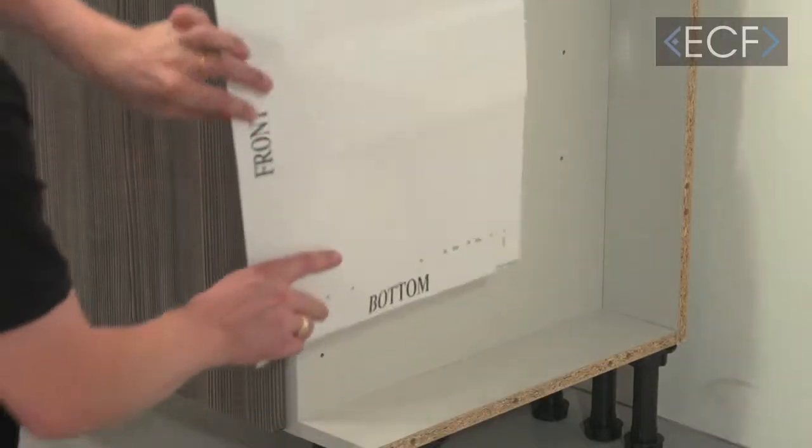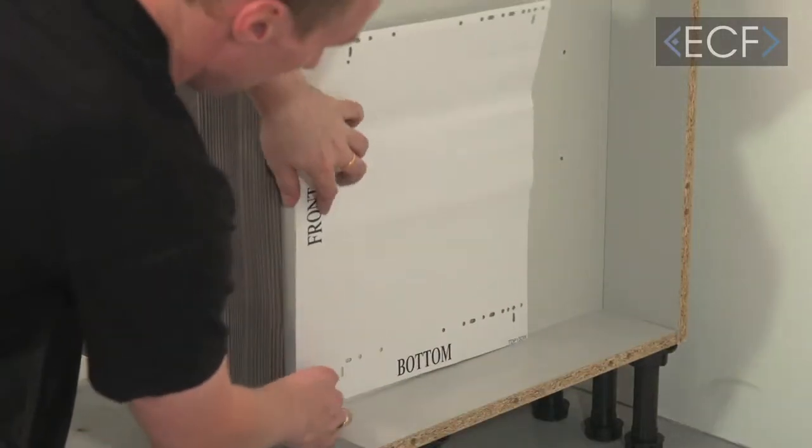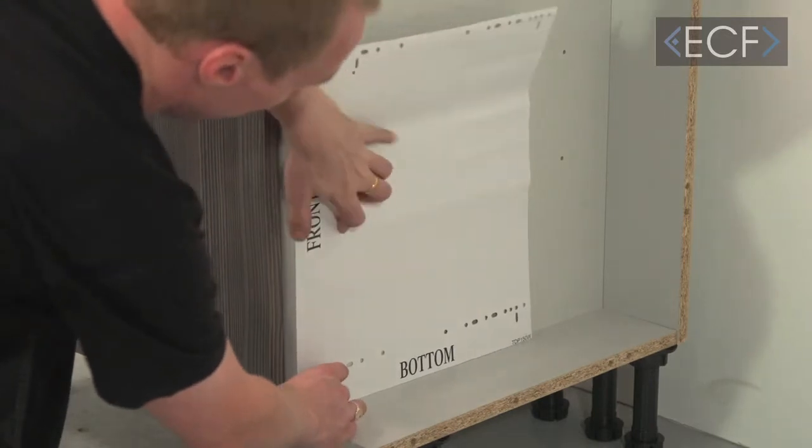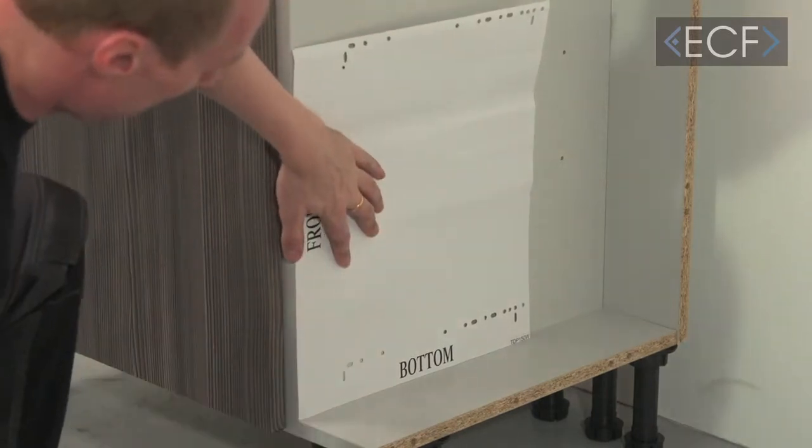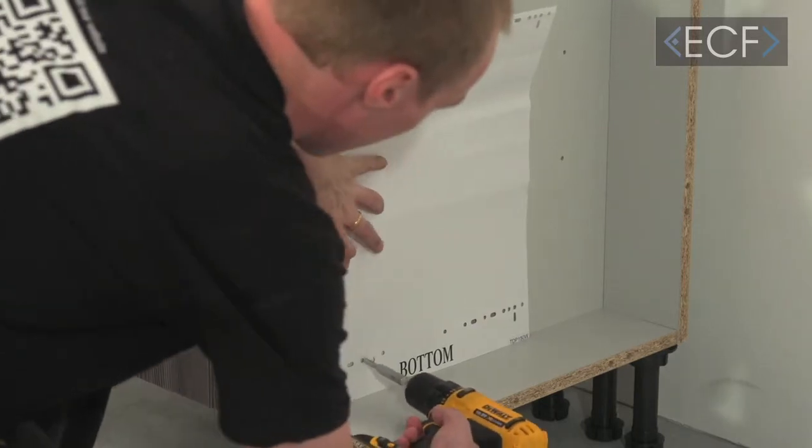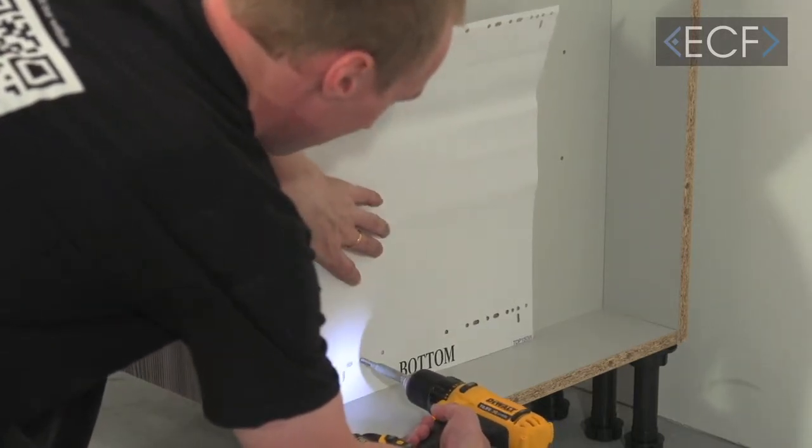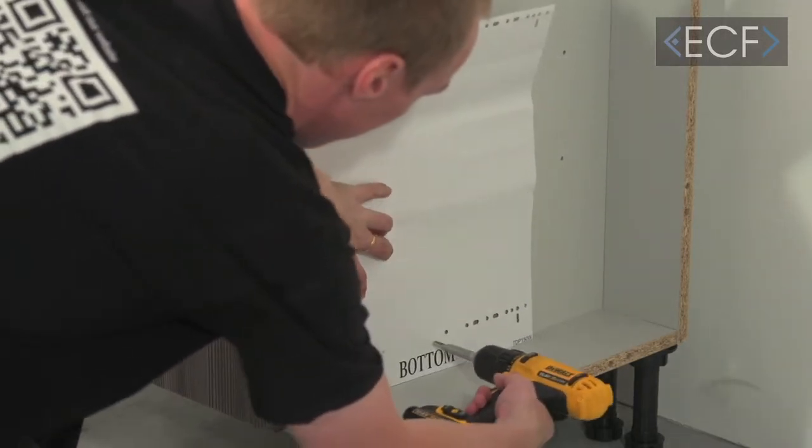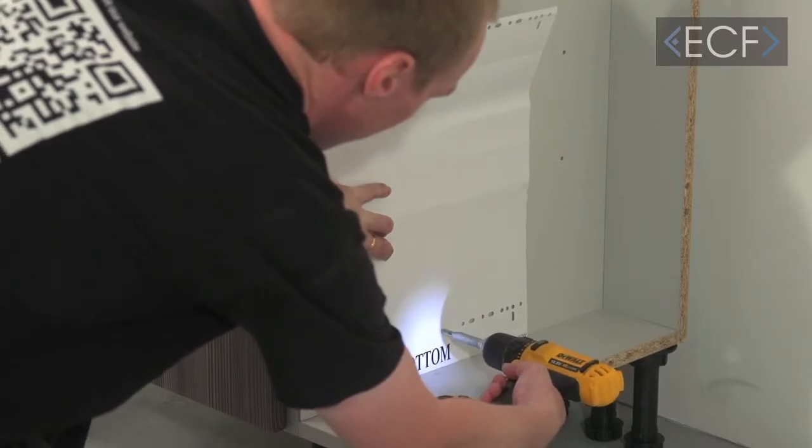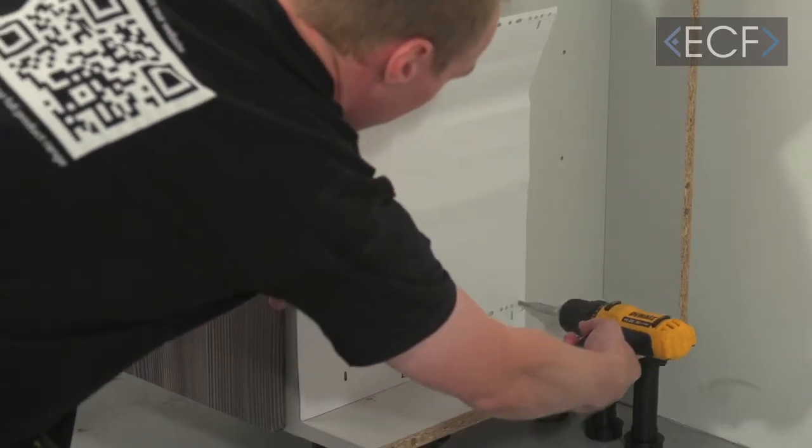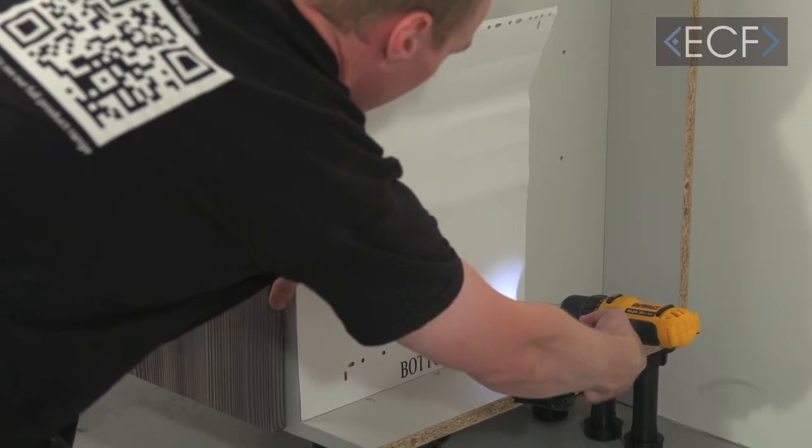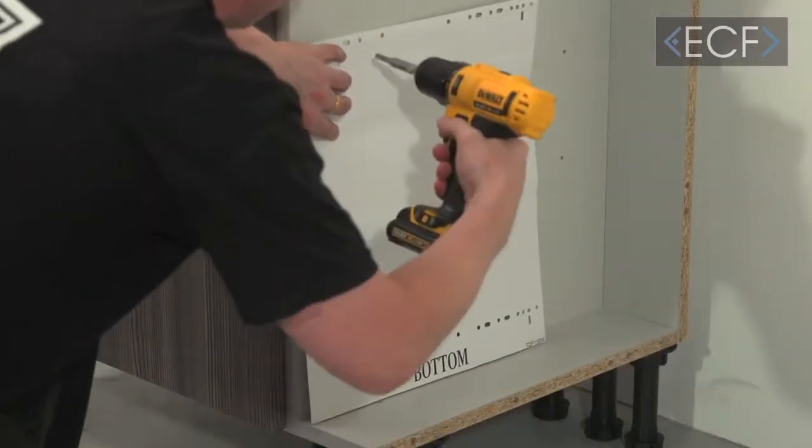First, line up your template at the bottom and front of the cabinet, then drill in three positions along for the bottom runner. Then do the same for the top.